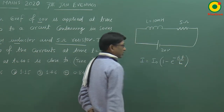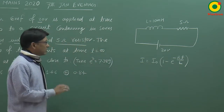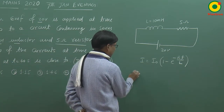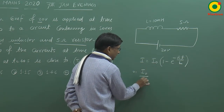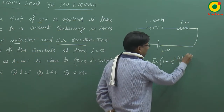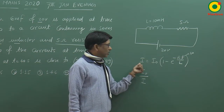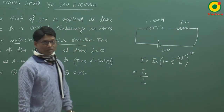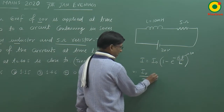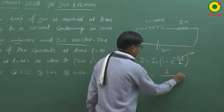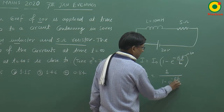ये equation आता है। इसमें i₀ जो होता है, इसको हम लोग कहते हैं steady state current — मतलब कि t=∞ पर जो current flow करता है। हमें यहाँ पर find करने के लिए कहा गया कि ये i₀ divided by i — जो t=40 second पर होगा। तो ये ratio आएगा: 1 divided by (1 - e^(-Rt/L))